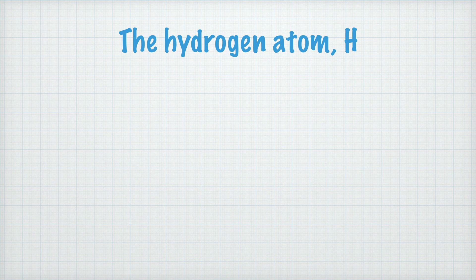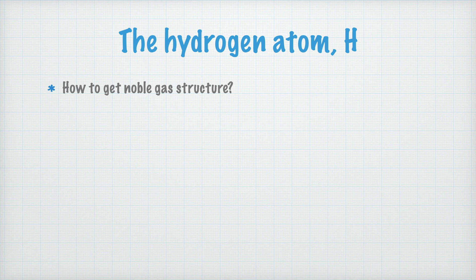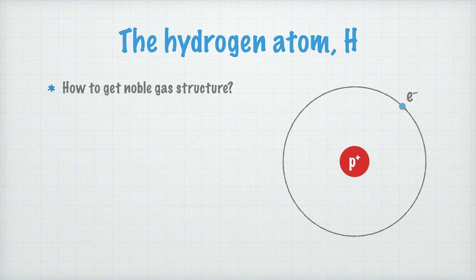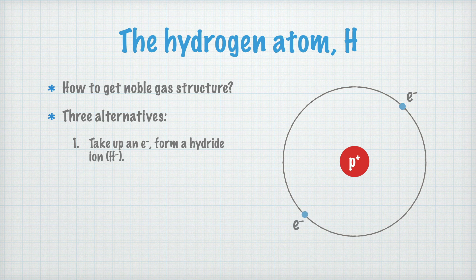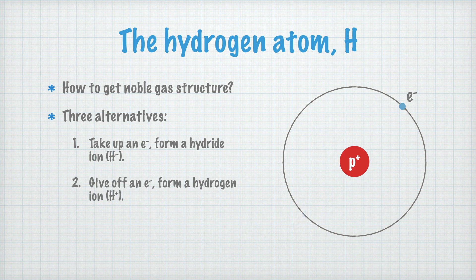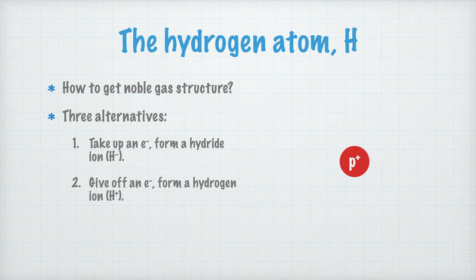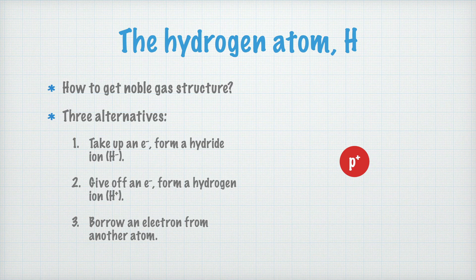Let me explain by looking at the hydrogen atom first. As chemical reactions take place, a good rule of thumb is that atoms try to get noble gas structure. A hydrogen atom consists of a proton and a single electron. There are essentially three alternatives: it may take up an electron to form a hydride ion H⁻, filling its K-shell with two electrons. Or it may give off an electron to form a hydrogen ion H⁺. The third alternative is that the hydrogen atom may borrow an electron from another atom — and in this way, it forms a covalent bond.